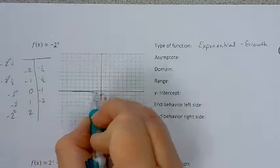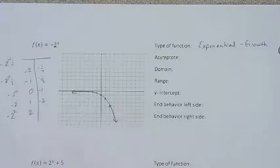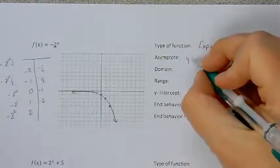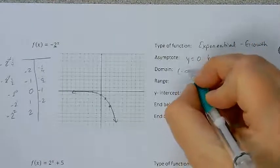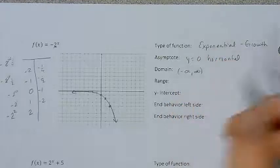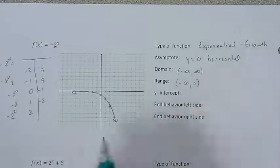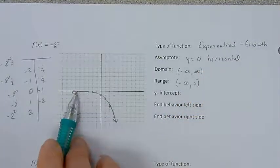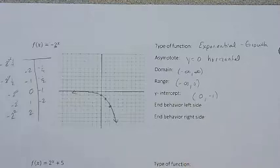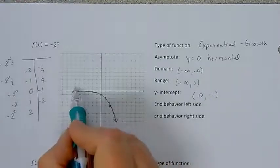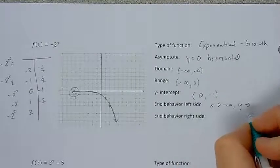What happens on this one is we have a graph that's approaching 0 but not touching. So our asymptote is going to be y equals 0, and it's horizontal. The domain is negative infinity to infinity. The range goes from negative infinity to 0, because all the y values start down here and go up to 0. The y-intercept is where x is 0 and y is negative 1. On the left side, as x approaches negative infinity, y is approaching 0.